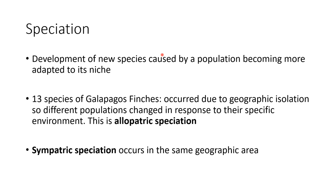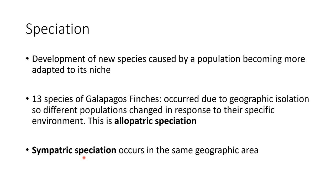Speciation is the development of a new species due to adaptations, as seen with the Galapagos finches. When speciation occurs in different geographic areas — like finches on different islands — it's called allopatric speciation. When it occurs within the same geographic area and still results in different species, that's sympatric speciation. In the sympatric case, organisms develop a new adaptation — like a different beak shape — to better survive in their environment.